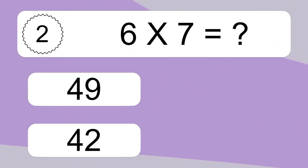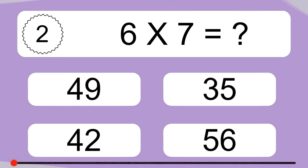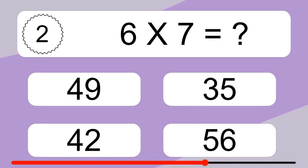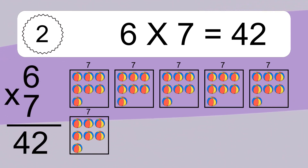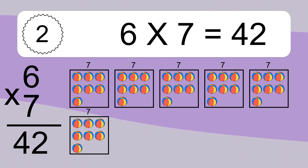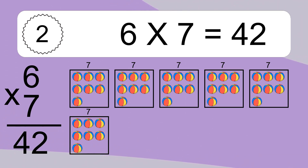6 times 7 equals what? 6 times 7 equals 42. We have 6 boxes, and each box has 7 colorful balls inside. If you count all the balls in all the boxes together, you will have 6 times 7 balls. This equals 42 balls.